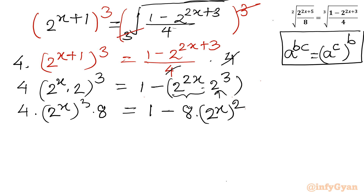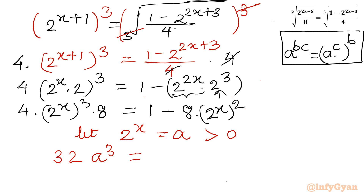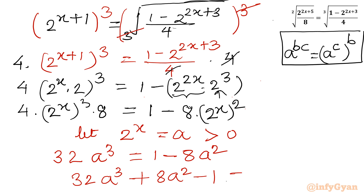Now I will use substitution. Let 2^x = a, and remember a will always be positive for real x. Then 4 · 8 = 32, so we get 32a³ on the left, and on the right 4 minus 8a². Rearranging gives the cubic equation: 32a³ + 8a² - 1 = 0.